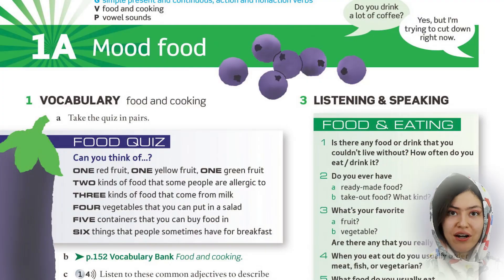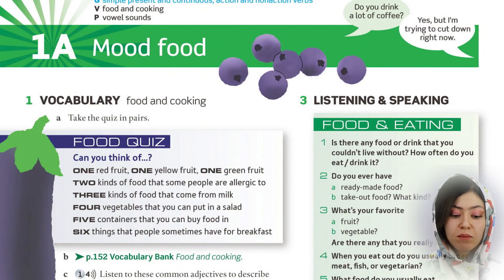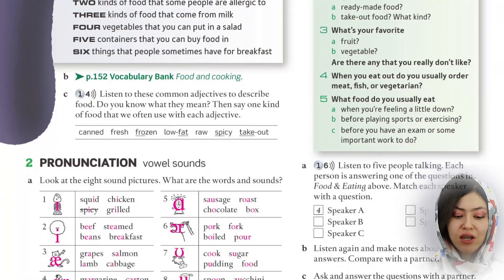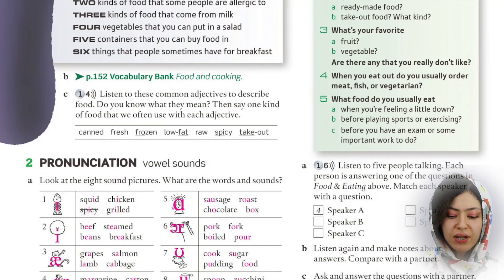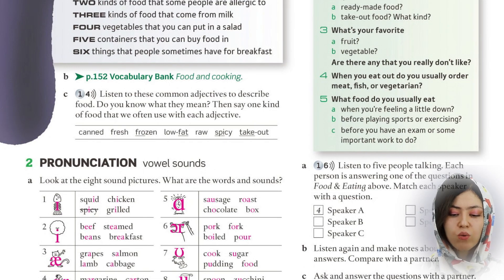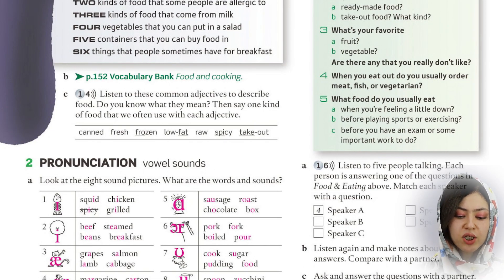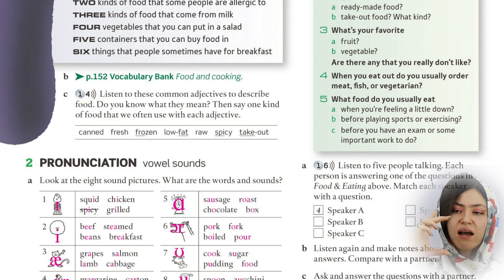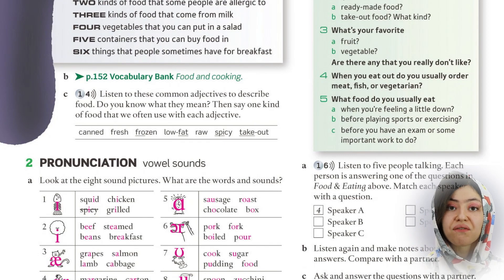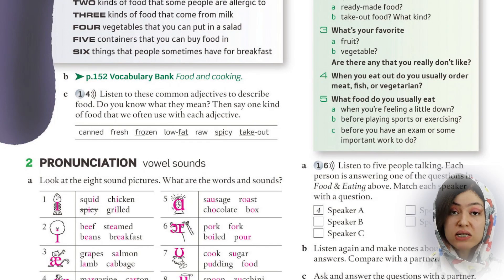Now we go back to page 4, unit 1A, and we are on part C of the vocabulary section. There are some adjectives we can use along with food. The first adjective is canned — for instance, we have beans in cans, so we say canned food or canned beans. Fresh — we buy food which is just picked, very fresh, so we call that fresh fruit or fresh vegetables.